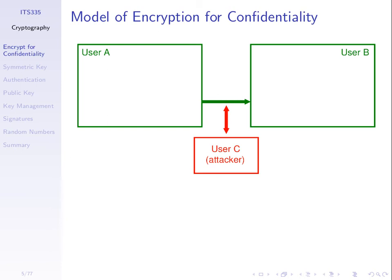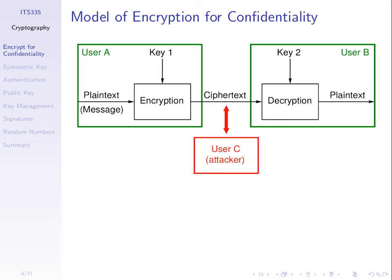So how do we stop C from seeing the contents of the message? We use encryption. We have the original message — we call it plain text. It doesn't have to be a text message, but the name we give the original message is plain text. We apply some algorithm — an encryption algorithm — which transforms this plain text into what we call cipher text, the encrypted form of the plain text. We use some key as an input to this algorithm. So the input to this encryption algorithm is the plain text and the key; the output is cipher text. Instead of sending the plain text across the network from A to B, we send the cipher text.